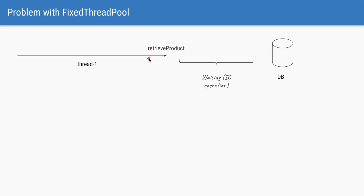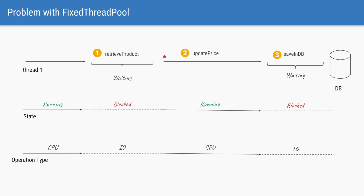Out of those 10 threads, let's take the example of thread one. When this thread for a particular product tries to call the retrieve-product operation, which is an I/O operation, that thread will have to wait for the site to return the response. The response could be immediate, or could take a few hundred milliseconds or even longer. So thread one will go into the waiting state. After it gets the product, it needs to update the price — let's say that's a computationally intensive method with no I/O operation — so it will run without waiting or blocking.